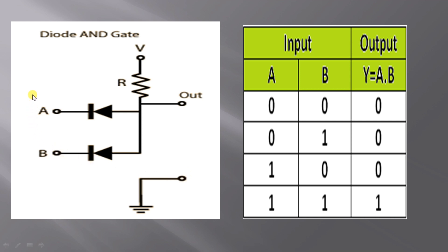A voltage of 5V is represented by 1. A voltage of 0V is represented by 0. 5V voltage is a high voltage and 0V voltage is a low voltage. High voltage is represented by 1.